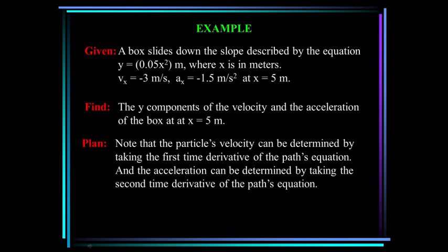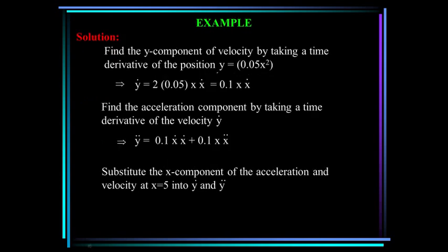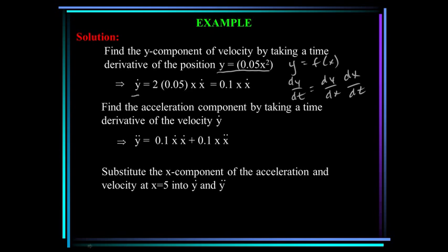The particle's velocity can be determined by taking the first time derivative of the path equation y equals 0.05x squared. Using the chain rule, dy/dt equals (dy/dx)(dx/dt). So y-dot equals 2 times 0.05 times x times x-dot, which reduces to 0.1x times x-dot.